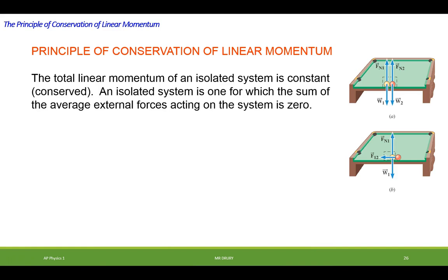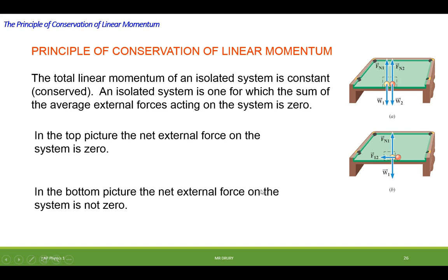The principle of conservation of linear momentum. The total linear momentum of an isolated system is constant or conserved. An isolated system is one for which the sum of the average external forces acting on the system is zero. So we know that in the top picture the net external force on the system is zero. Because here's what we have. We have the weight of object one acting down, but the normal force is acting up. So these two cancel each other out, so they don't really interact or they don't count. And the same thing is true with these guys. And those are internal forces, so therefore they cancel each other out.